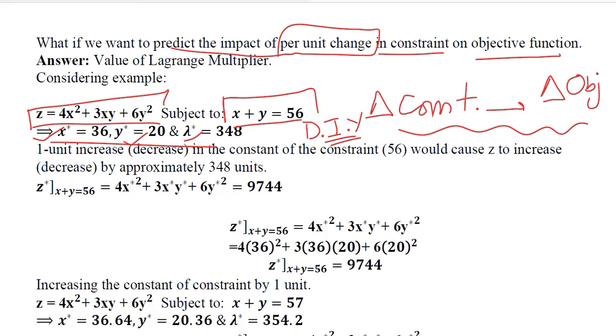Now we should try to interpret this. This is that one unit increase or decrease in the constant of the constraint, that is this, would cause Z, that is the objective function, to increase or decrease by approximately 348 units. So this 348 is being interpreted here.